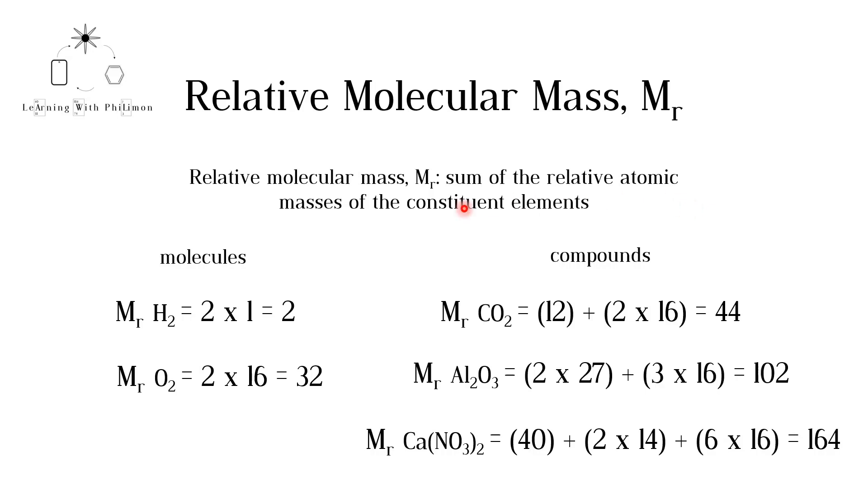For example, a hydrogen molecule, H2, consists of two hydrogen atoms bonded together. We therefore multiply the relative atomic mass of hydrogen by 2. The relative molecular mass of a hydrogen molecule is 2.